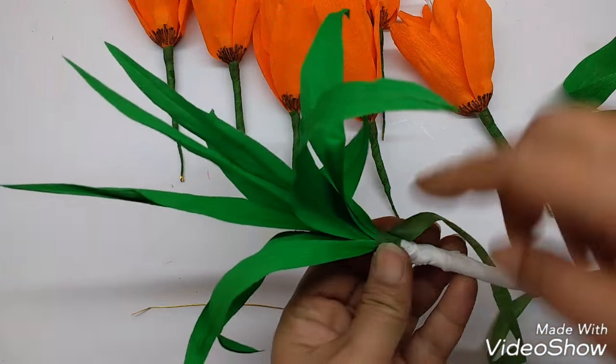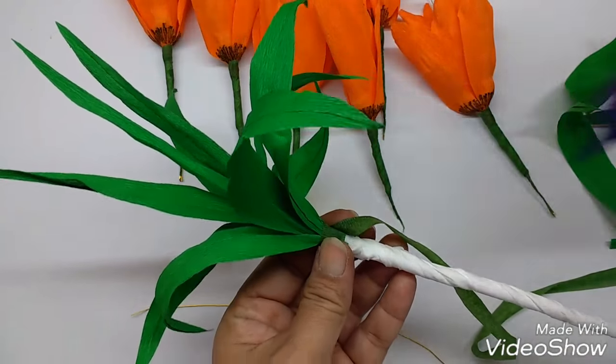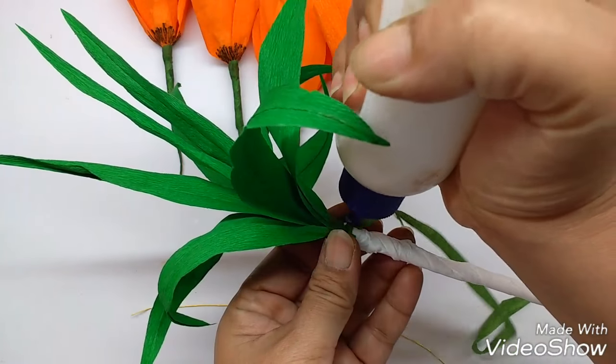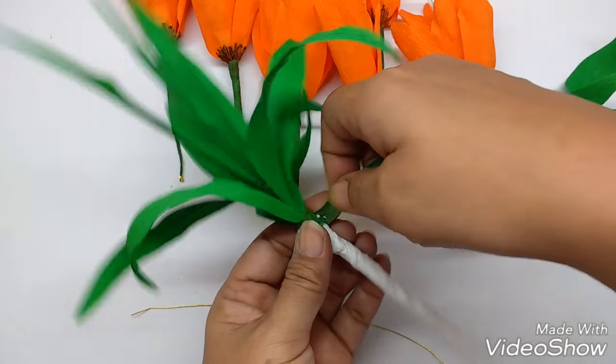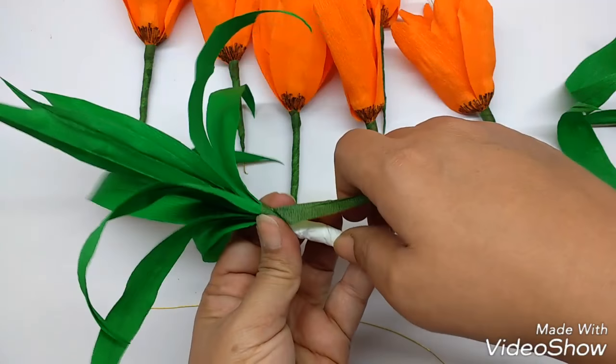When you cover so many of these leaves, just apply a little glue on the tape so that it stays where it is on the last leaf and the tape. Stick it.